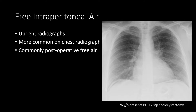When you see gas between the hemidiaphragm and the liver, you can be confident that that's air in the abdomen. Most often we see post-operative free air, and it can be incidentally detected on radiographs. Here you can see free air highlighted by the three yellow arrows under both the right and left hemidiaphragms.